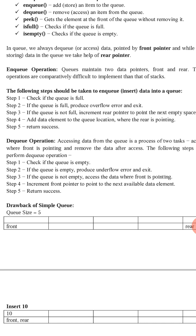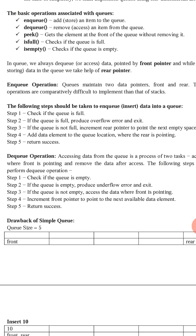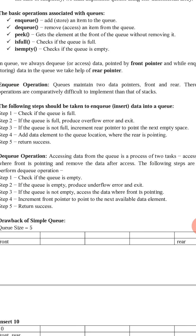The algorithm to enqueue data into a queue: first, check whether the queue is full. If it is full, display an error message stating the queue is full and no more elements can be inserted. If the queue is not full, increment the rear pointer to point to the next empty space, insert the new element at that location, then exit the function.